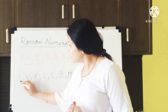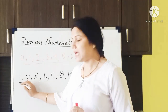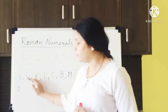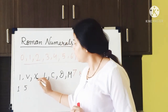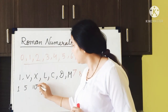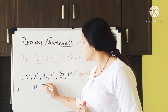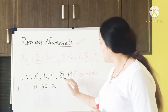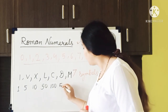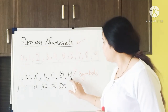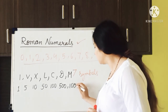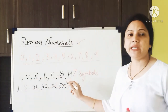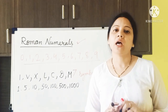The value of I is 1, the value of V is 5, the value of X is 10, the value of L is 50, the value of C is 100, the value of D is 500, and the value of M is 1000. By using only these 7 symbols, the Romans used to form other numbers.